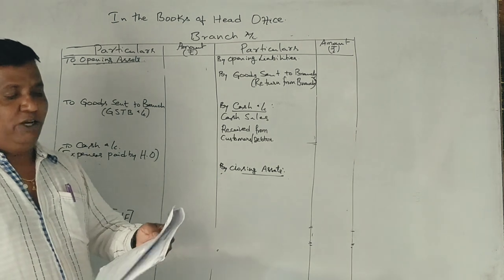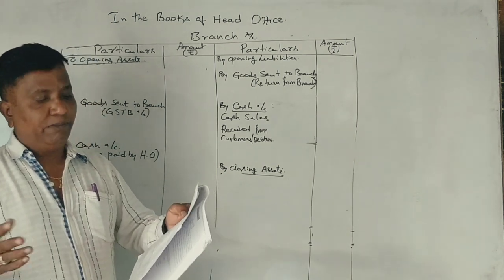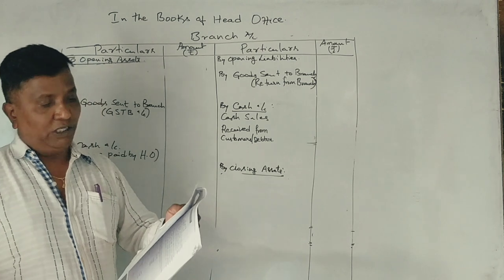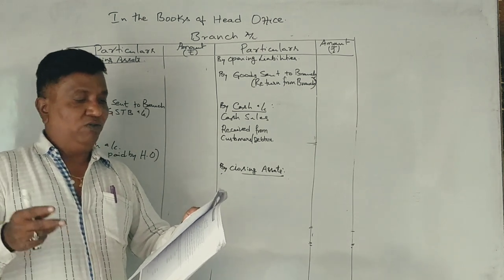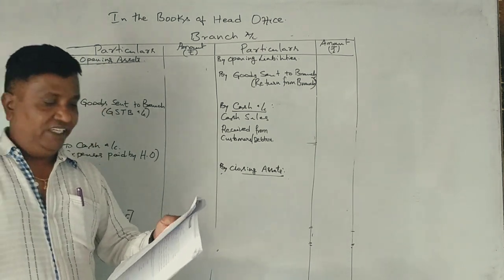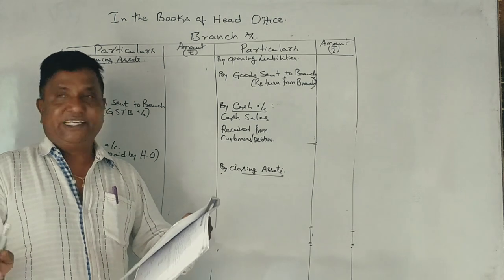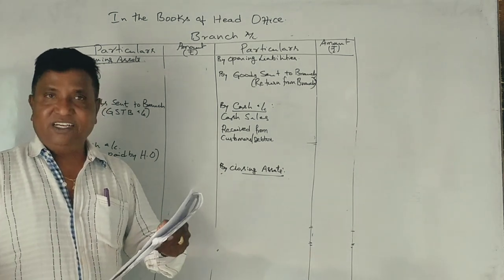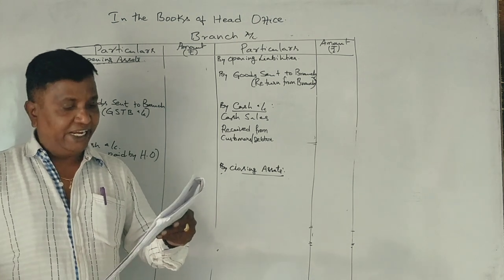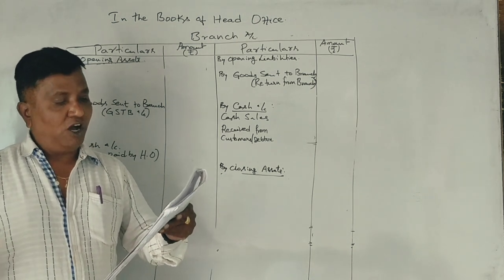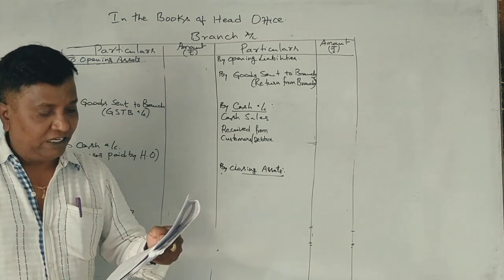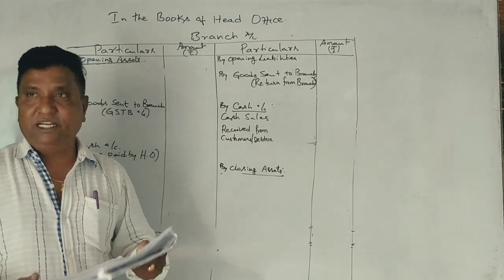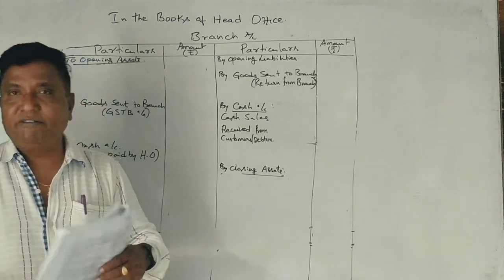The data given includes: goods sent to the branch, goods returned by the branch, stock at branch on 1-1-2013, petty cash on 1-1-2013, cash sales, cash sent by head office for expenses — salaries, rent, petty cash — and stock at branch on December 2013, petty cash on December 2013. We are going to prepare the Belagavi branch accounts.